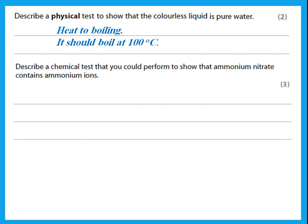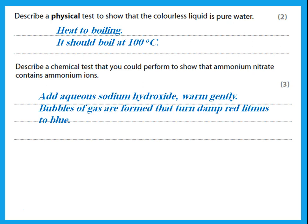Describe a chemical test to show that ammonium nitrate contains ammonium ions. The test for ammonium ions: add aqueous sodium hydroxide and warm gently. Bubbles of gas will form that turn damp red litmus paper to blue. This is what your answer should include — make sure you memorize all of these tests.